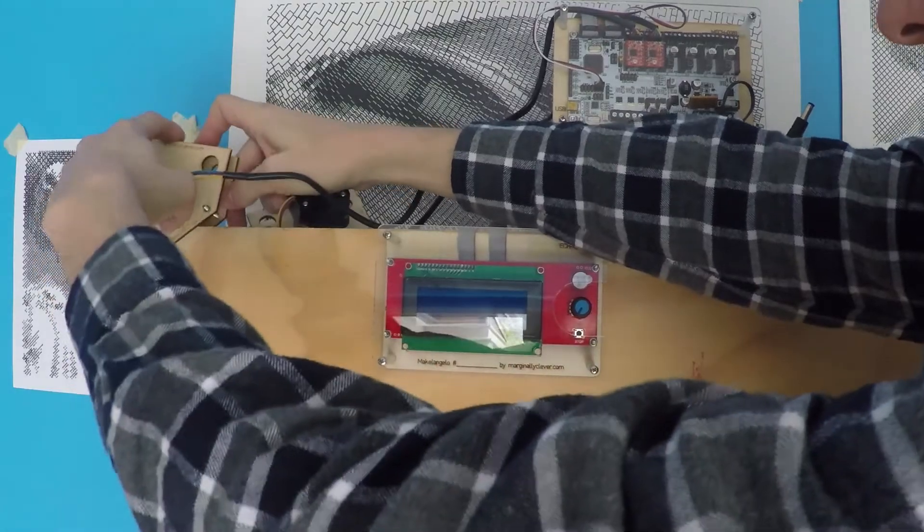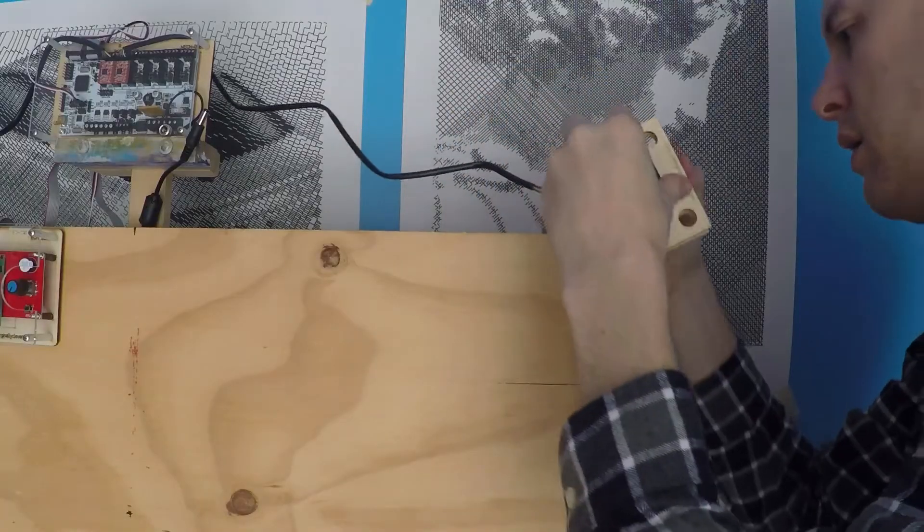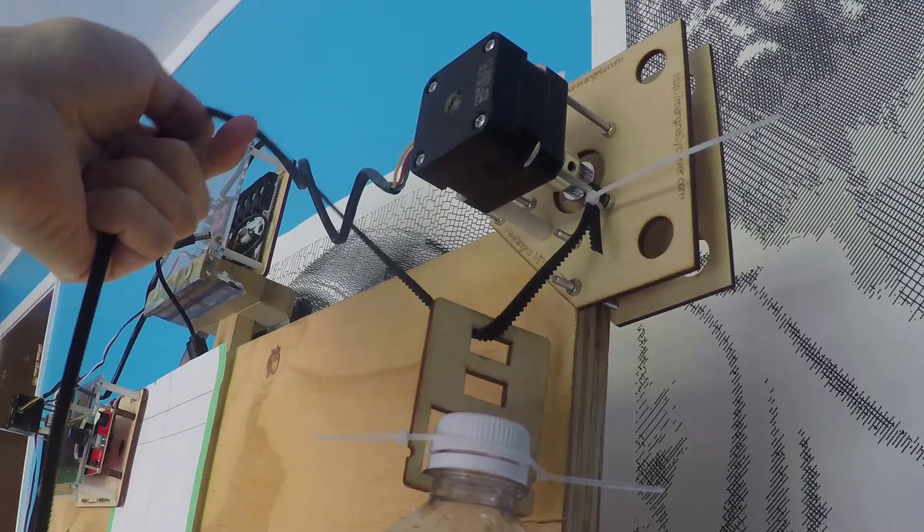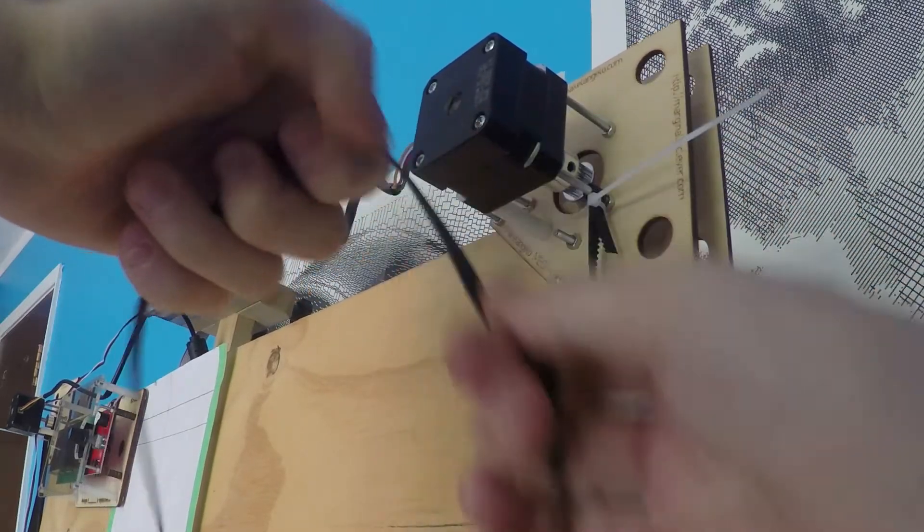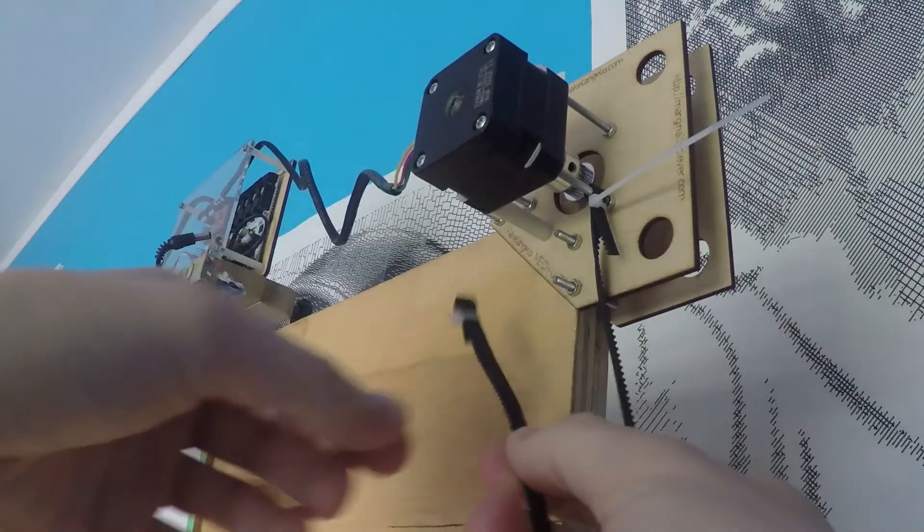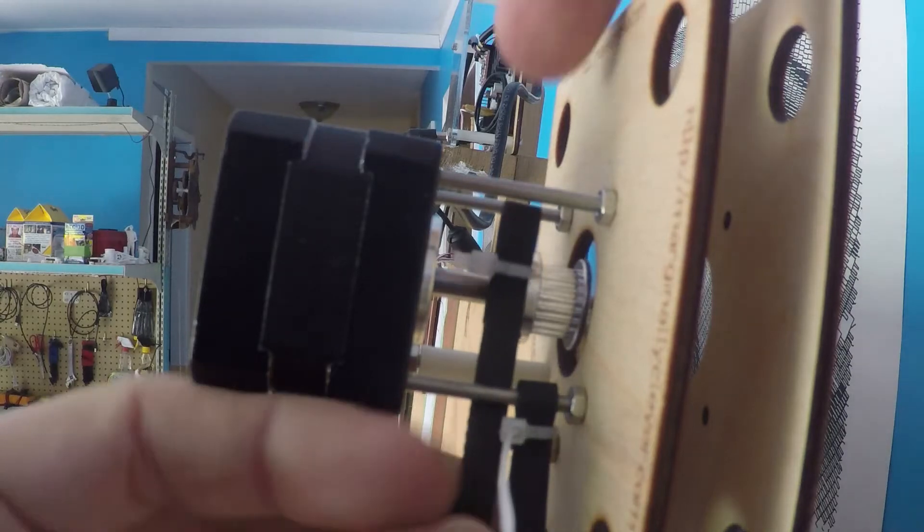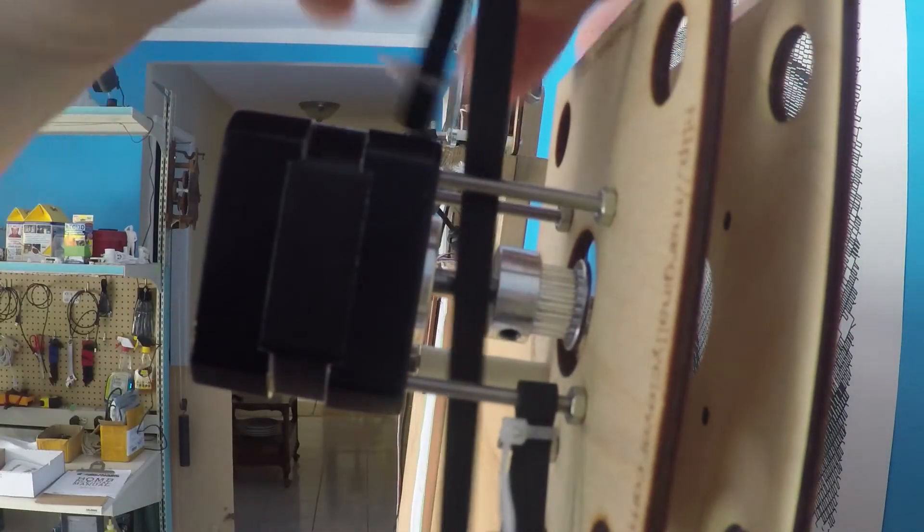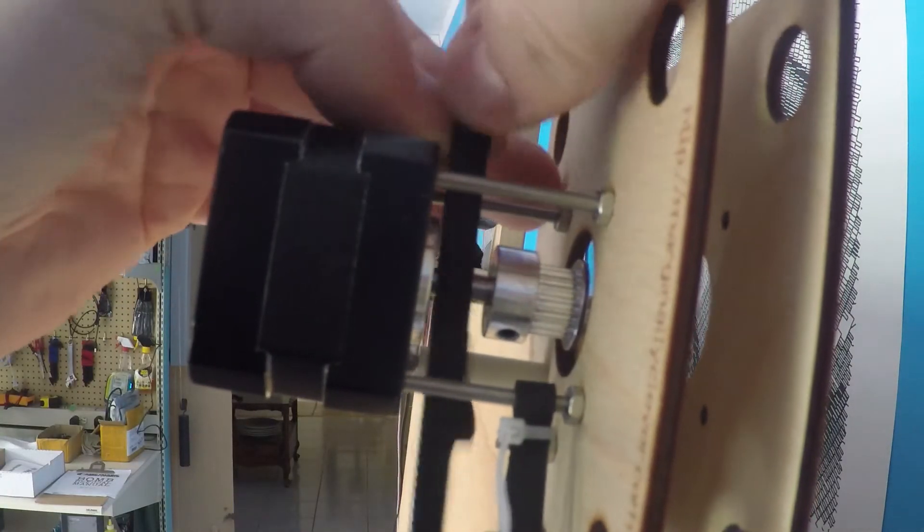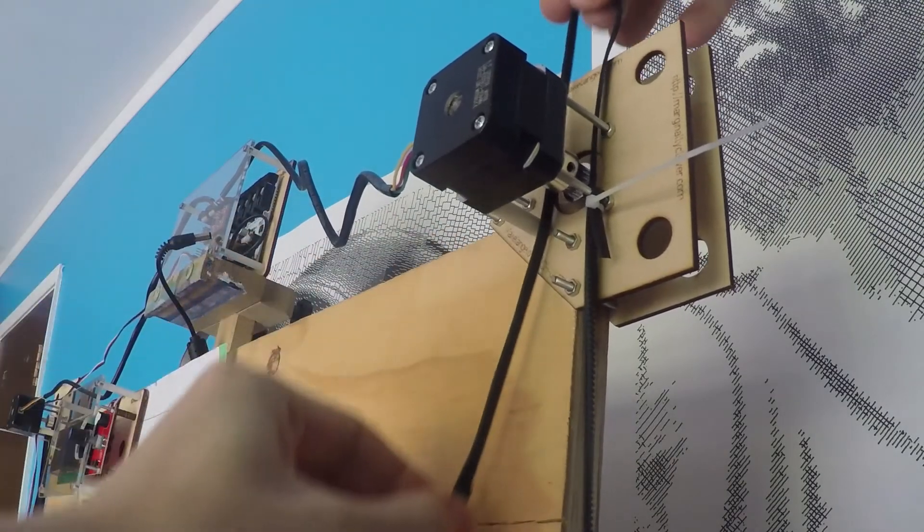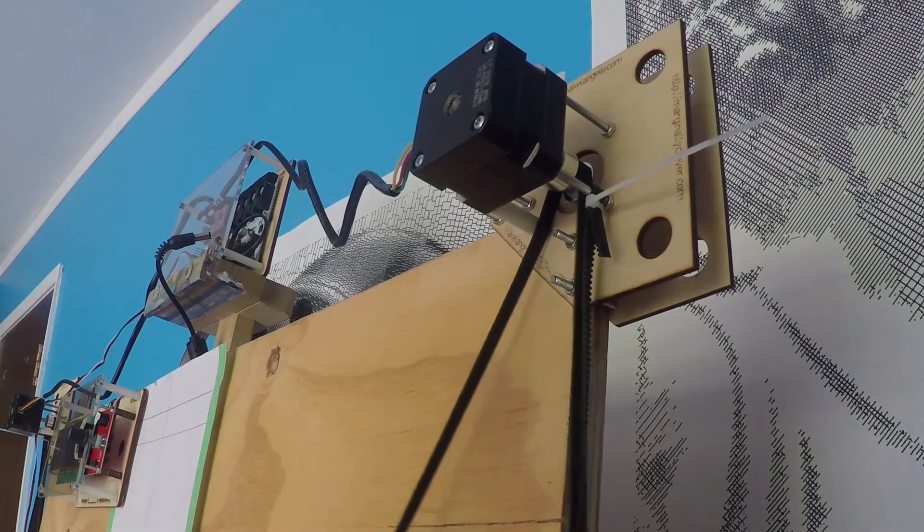If the nuts come loose while it's running, you'll hear a buzzing sound. That's your cue to tighten them up. Make sure the belt doesn't get twisted. And then it's in and up and over and back down the other side and right onto the teeth. Perfect.